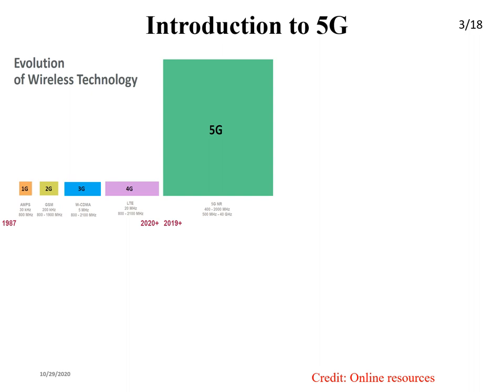In LTE, rapid improvements included Voice over IP, MIMO, different MIMO variants to enhance data rate and voice quality. Many changes happened in 4G — MIMO technology, full IP-RAN, distributed network with baseband processing at the eNodeB level. But 5G is a completely different, sudden jump rather than a gradual evolution.